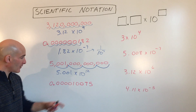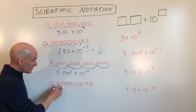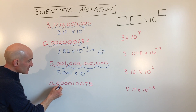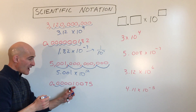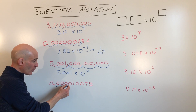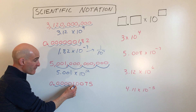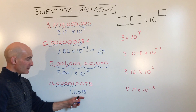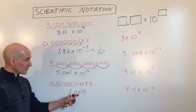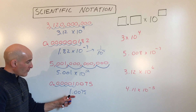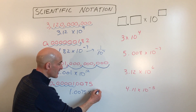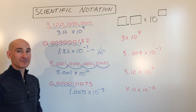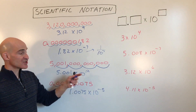Here we have another really small number. We want that decimal point to move so there's just one single non-zero digit in front of it. Moving it 5 places gives us 1.0075 — those interior zeros are significant digits, and the leading zeros are placeholders we don't need. So this is 1.0075 times 10 to the negative 5th power. That's how you convert from standard notation to scientific notation.